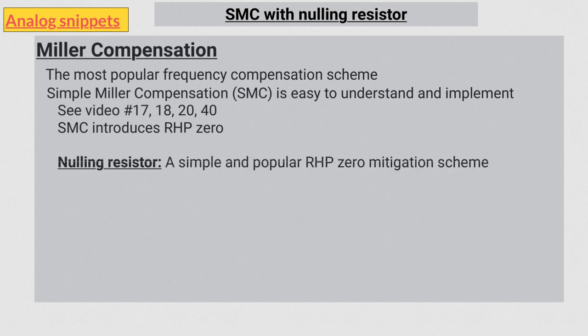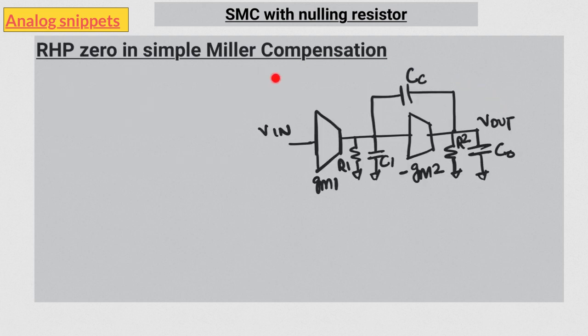Let's start by intuitively understanding the right-hand plane zero. Here we have a simple model of a two-stage Miller compensated OTA. The Miller effect is caused by feedback around the second stage, which is an inverting stage.